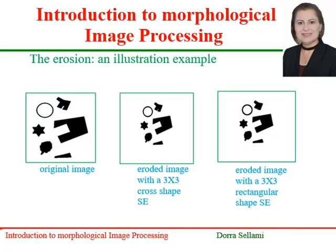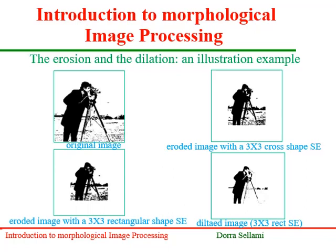Here is an illustration example of the erosion process on a synthetic image. The original image contains many different shapes. By eroding the image, the dark pixels invade bright ones. We use here two structural element shapes: the cross shape and the rectangular one. An illustration example of erosion and dilation process on the cameraman image is illustrated here. We use two structural element shapes, the cross one and the rectangular one. The eroded image puts the cameraman in relief but amplifies the surrounding noise. The dilation operation erases isolated dark pixels in the foreground; nevertheless, the cameraman is reduced in size.